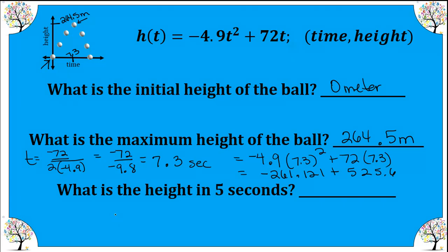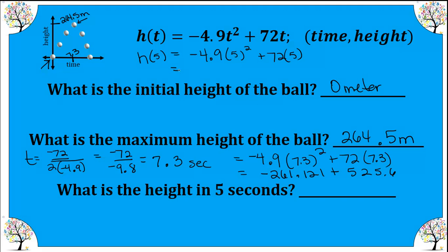What is the height at five seconds? We're looking for our output when the input is five seconds, so we plug in five seconds and calculate. We get 237.5 meters, so at about five seconds the ball is about 237.5 meters high. If they're asking for height, you simply plug in your time value; if they ask for seconds, you plug in the height they give you.